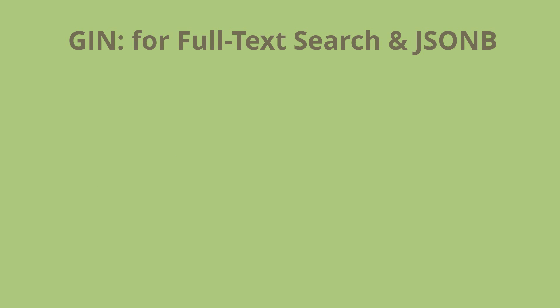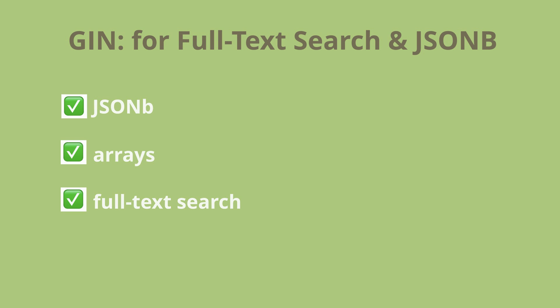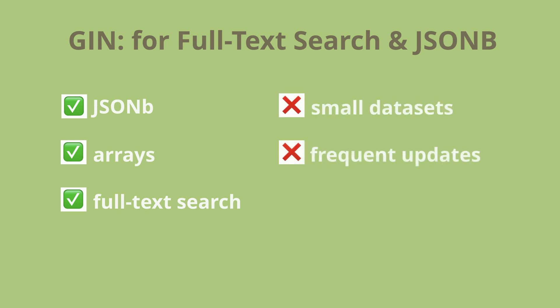GIN indexes are the best option when working with JSONB fields, arrays, or full-text search. They significantly improve performance for queries that need to search for elements within structured or semi-structured data. However, GIN indexes are not ideal for small datasets or tables with frequent updates, since they take up more space and are expensive to update, making them less suitable if your table is constantly changing or has a relatively small number of rows.